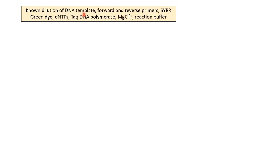Just like DNA replication inside the cell, where DNA polymerase requires different components for polymerization, real-time PCR is carried out similarly in a test tube by mixing DNA polymerase and other components in a thermal cycler real-time PCR machine. We add different concentrations of known DNA template, a pair of single-stranded primers, SYBR Green dye, dNTPs, Taq DNA polymerase, magnesium chloride, and the reaction buffer. I will discuss the role of each of these components later in the video.